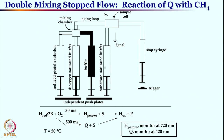After 30 milliseconds, if the substrate is pushed in, we are looking at the peroxo reacting with methane. If after 500 milliseconds we look, we are studying the intermediate Q formation and its reaction with substrate. We can program the double-mixing so that within 30 milliseconds the substrate loop is pushed in — these instruments are very fast, accurate, and expensive.